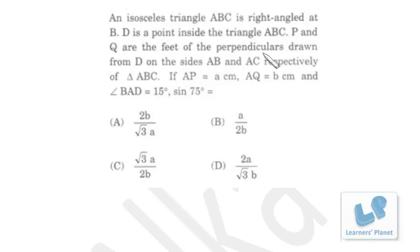P and Q are the feet of the perpendiculars drawn from D on sides AB and AC respectively of triangle ABC. Now if AP is equal to a centimeter, AQ is equal to b centimeter, and angle BAD is 15°,